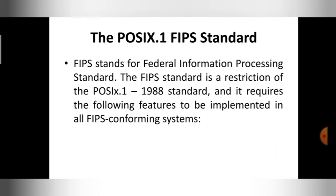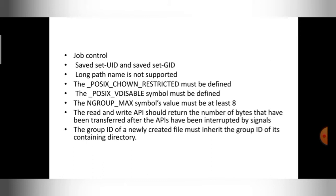FIPS requires the following features to be implemented in all FIPS-conforming systems. If you are using a FIPS standard, these features should be implemented without fail. The first feature is job control. If you are using a FIPS standard for your operating system programming, job control is a must — it should be supported.